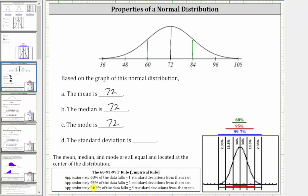Approximately 95% of the data falls plus or minus two standard deviations from the mean, which for our graph is from 48 to 96.